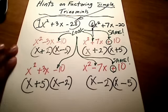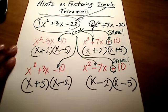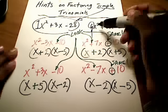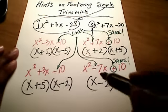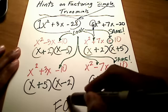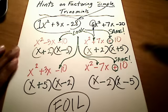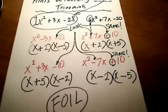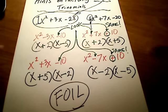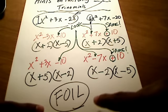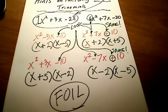The last thing I want to tell you is: any time you're factoring trinomials, whether they're simple or whether they have coefficients out front, always check your answer by FOILing. Always check by FOILing — it's a great idea not just on your homework but for quizzes and tests. Any time you need to check your answer, FOIL it back out and make sure you get back to that original trinomial.